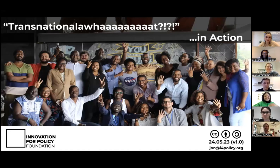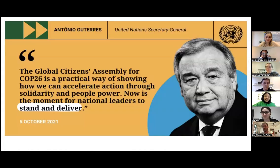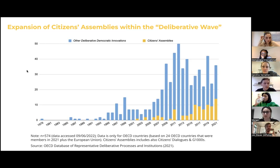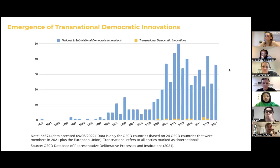I'm going to talk about the Global Citizens Assembly on Climate. Before that, I'll zoom out and talk about the emergence of citizens assemblies within the context of what's been referred to as the deliberative wave. Looking at democratic innovations — this is a database from the OECD, so it focuses on OECD countries, which is not globally representative but indicative — you can see how citizens assemblies have emerged. Transnational democratic innovations are a very, very new emerging phenomenon; the OECD database traces the first transnational democratic innovation to around 2007.